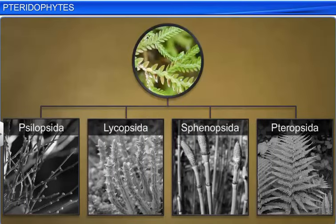Based on the organization of the plant body, including the nature of the leaf and location of sporangia, they are classified as: Psilopsida, Lycopsida, Sphenopsida, and Pteropsida.